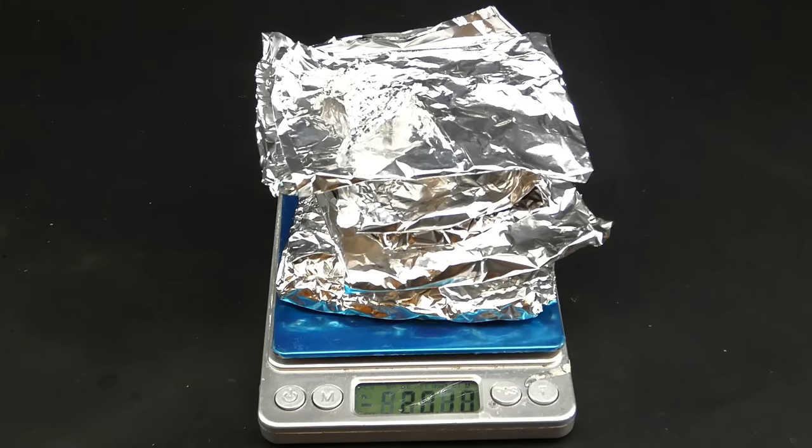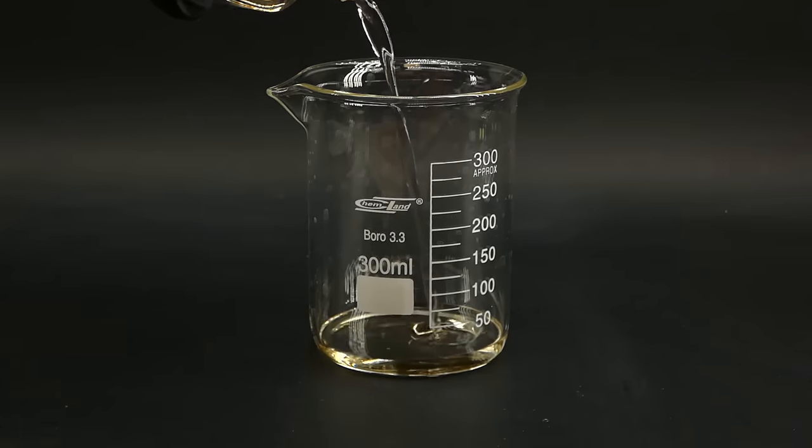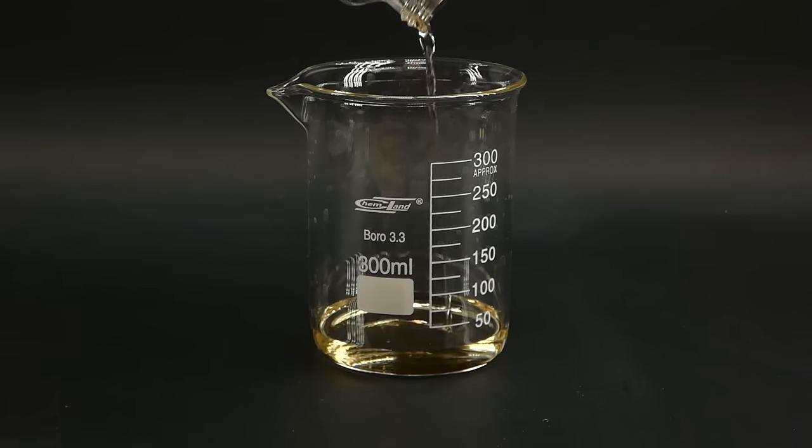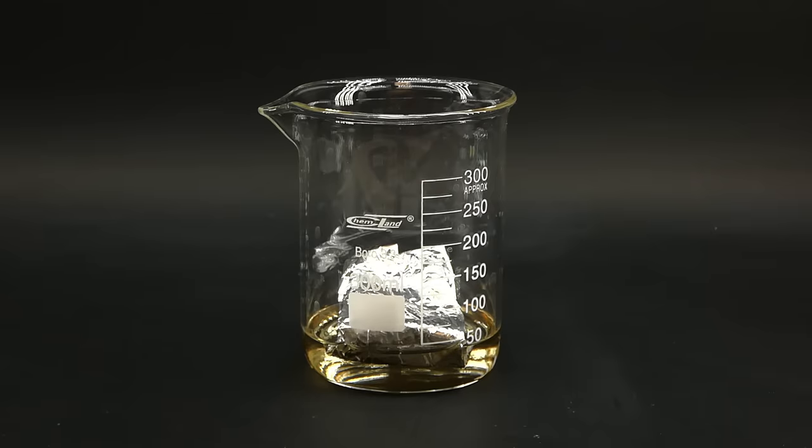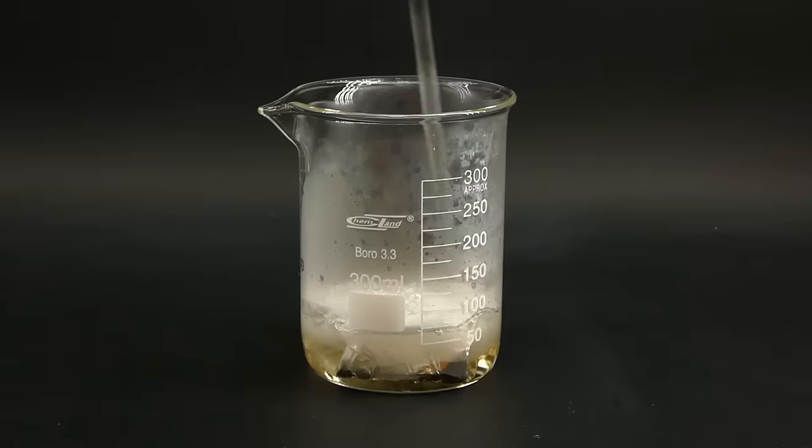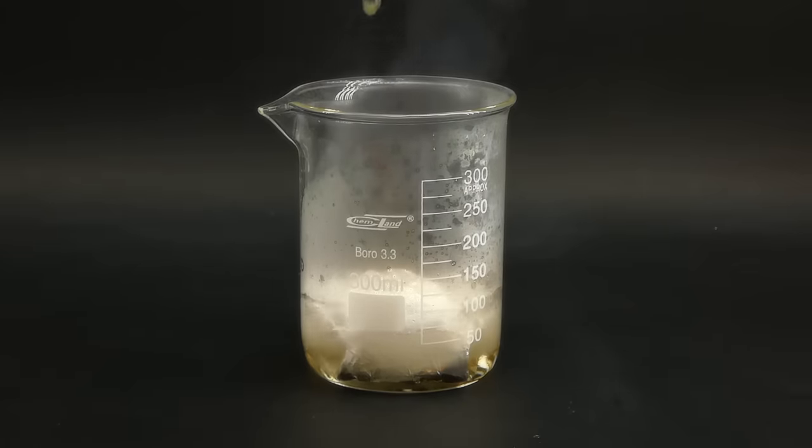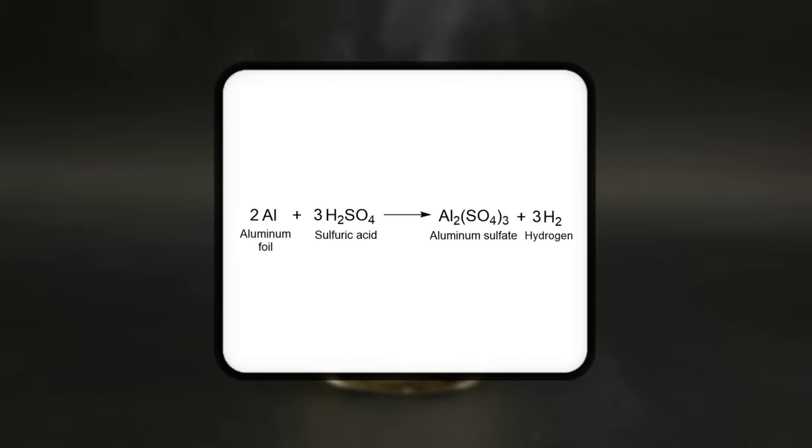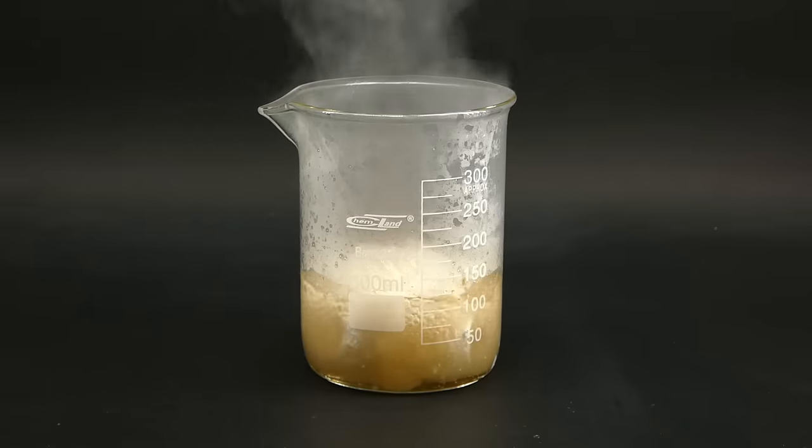To start I got some aluminum foil that I used to wrap my sandwich with earlier and got it onto a scale. I then topped off the weight to 20 grams using some more fresh foil. And to start dissolving it I poured around 30ml of concentrated sulfuric acid into a beaker and added a bit of the foil. Initially nothing happened but when I added some water a very vigorous reaction started to occur in which the sulfuric acid reacted with the aluminum to form aluminum sulfate and hydrogen gas.